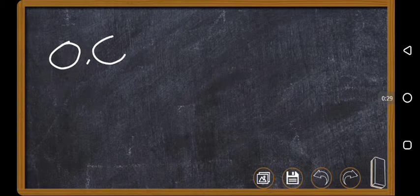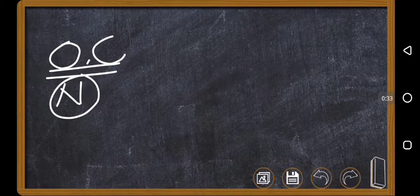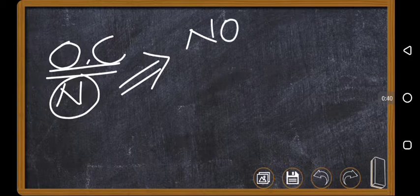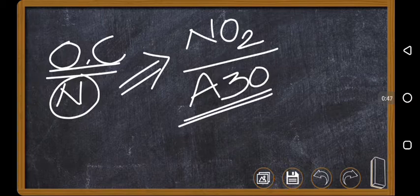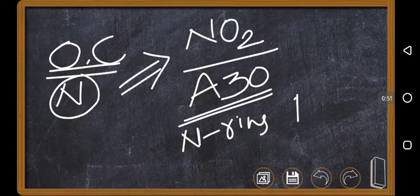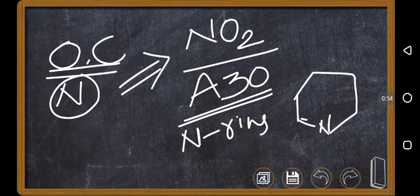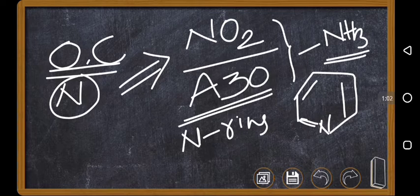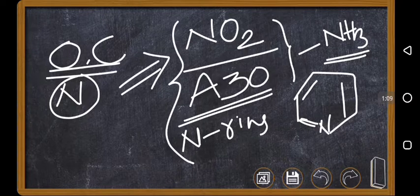If an organic compound contains nitrogen, it can be estimated by Kjeldahl's method. However, this method is not applicable to nitro-containing compounds, azo-group containing compounds, and nitrogen present in a ring like pyridine-type compounds. So for the question 'for which compounds is Kjeldahl's method not applicable?' — if a nitro group or nitrogen in a ring is present, this method is not applicable.